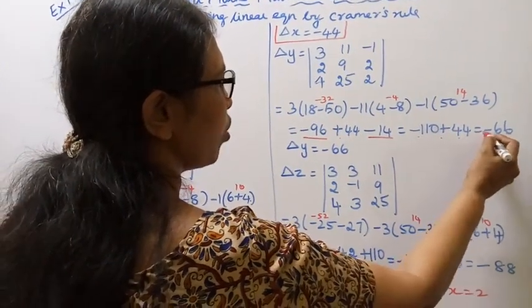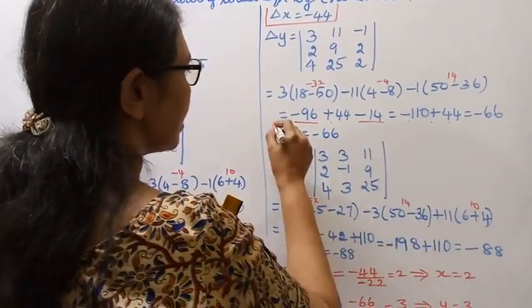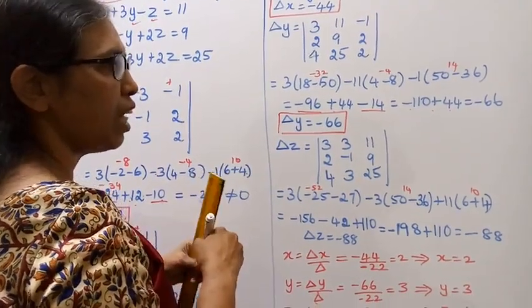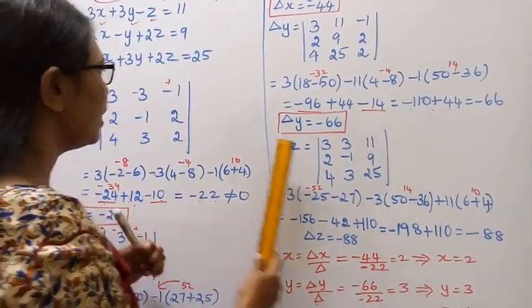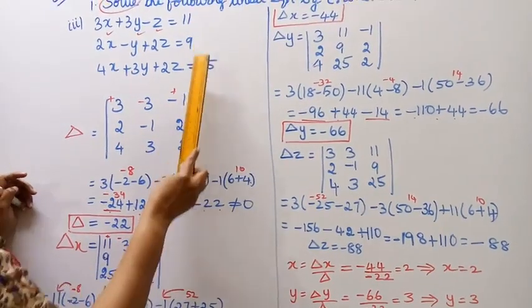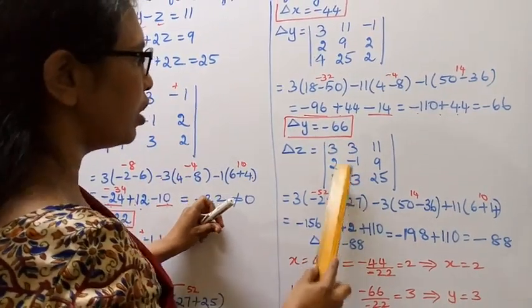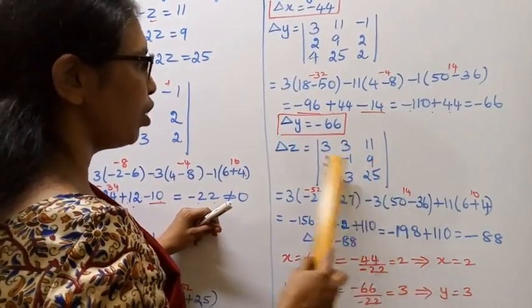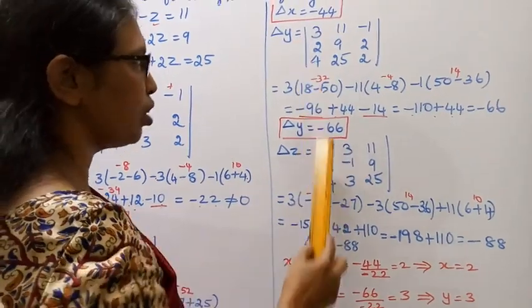Delta z - we need to put here this column value 11, 9, 25. So: 3, 3, 3; 2, minus 1, minus 1; 4, 3, 3; and 11, 9, 25. Delta z, as usual, like delta x, delta y, we find the determinant.